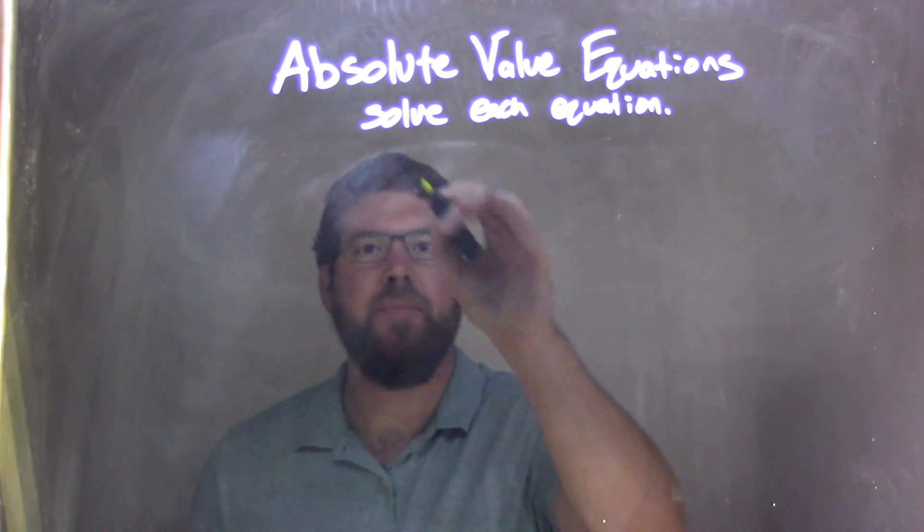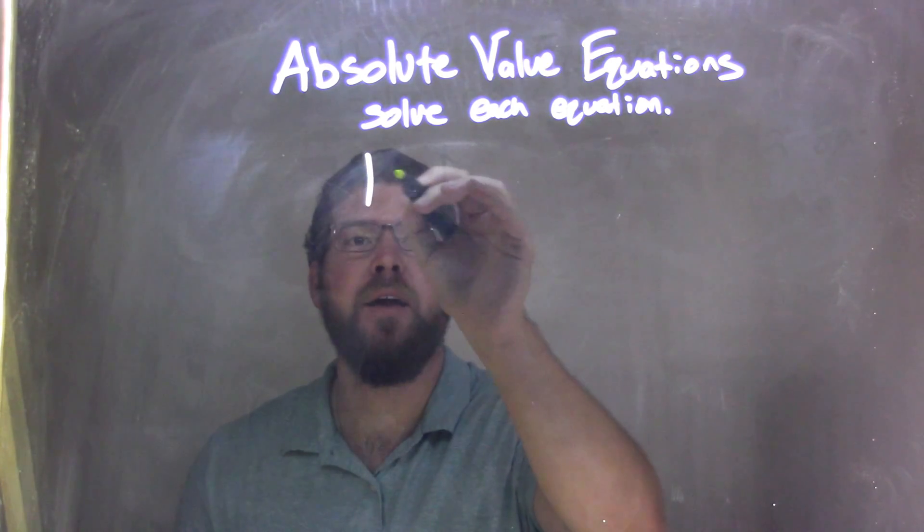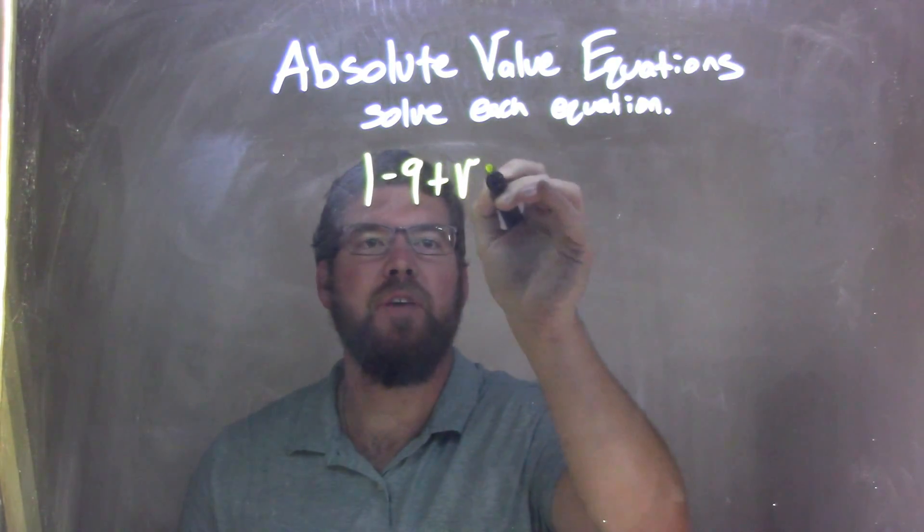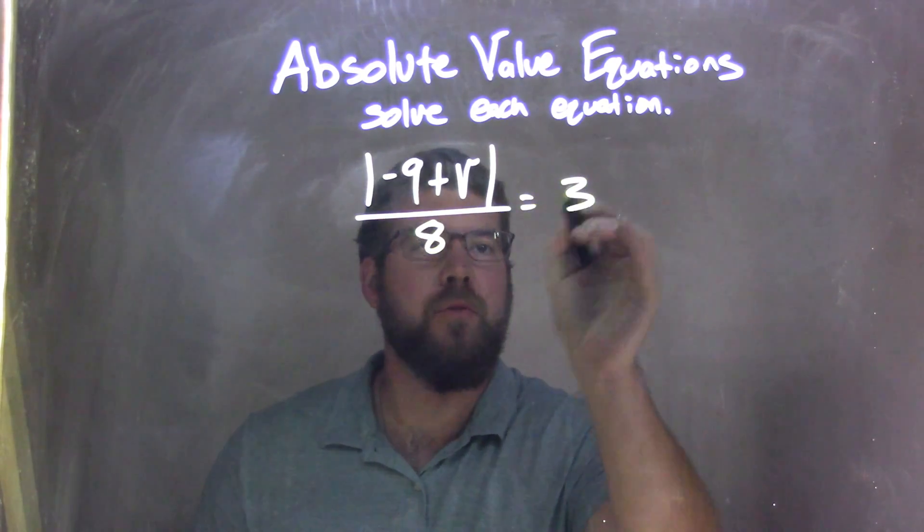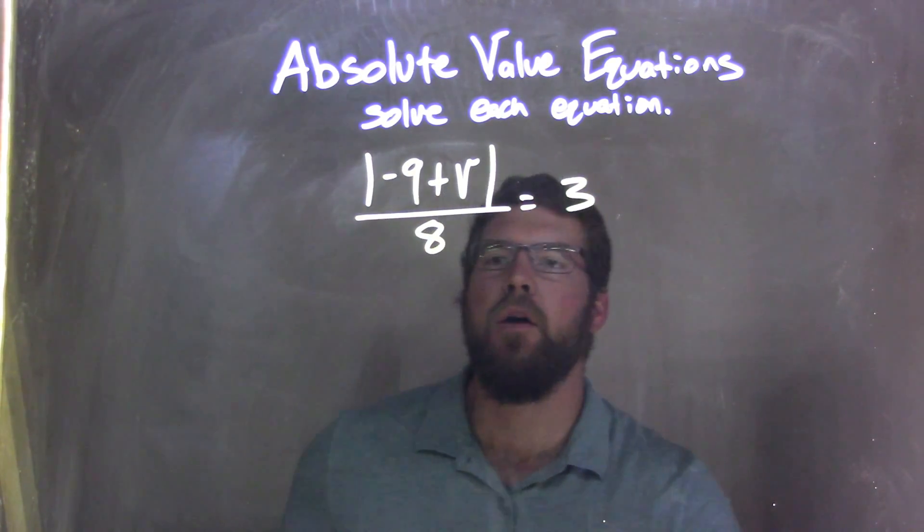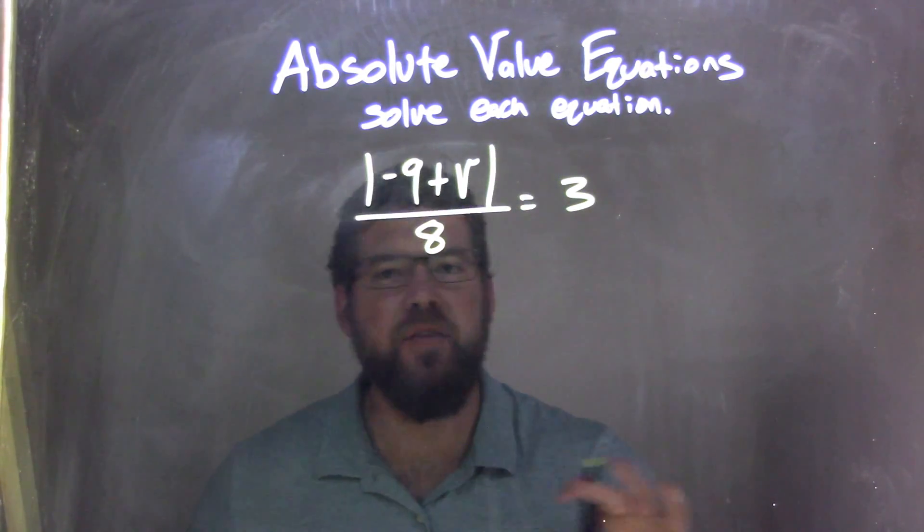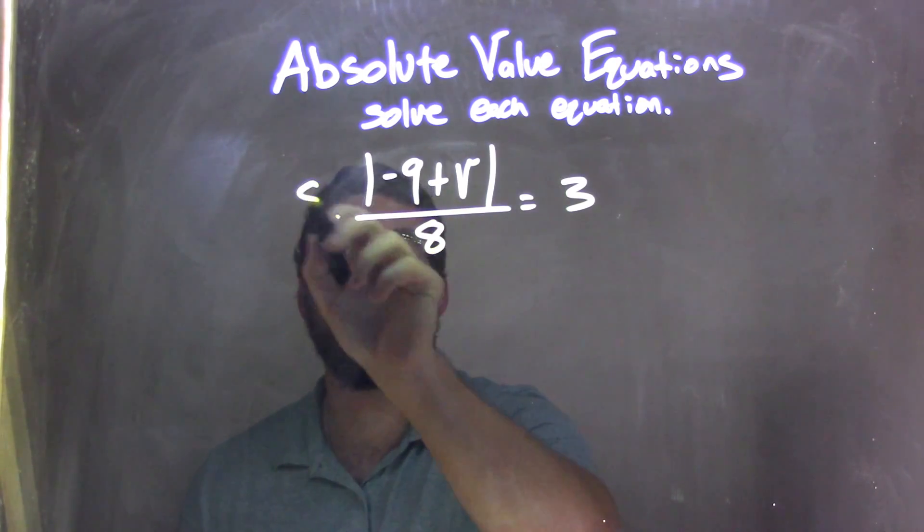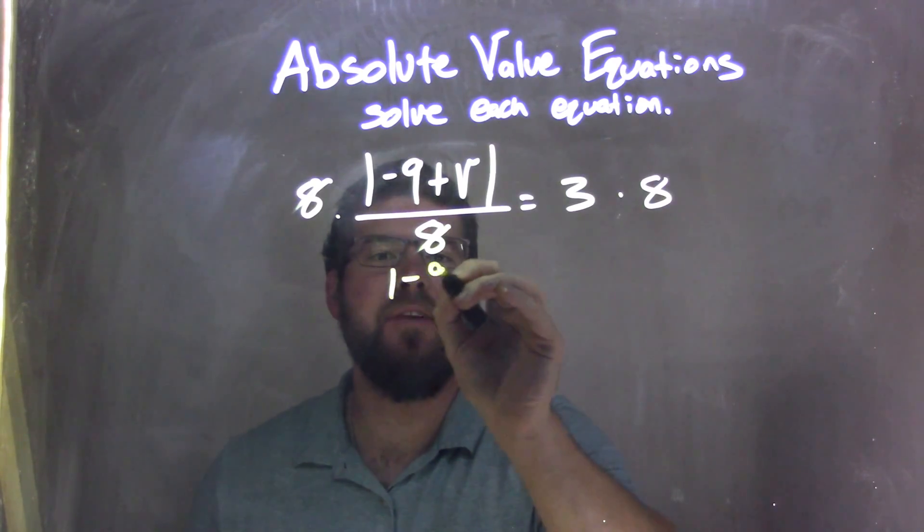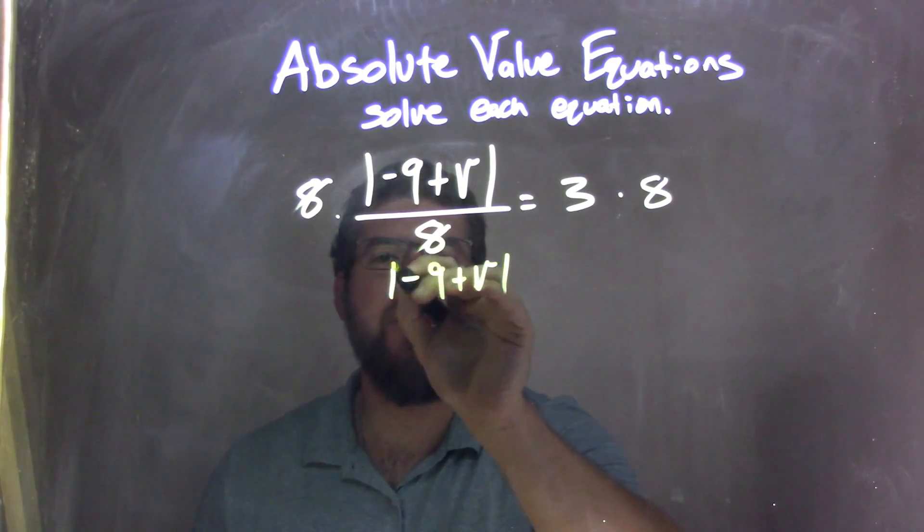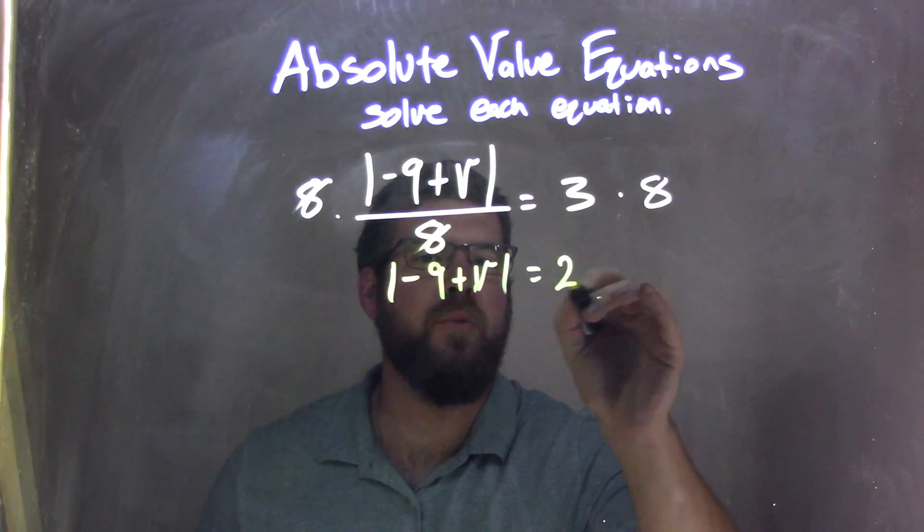If I was given this equation, the absolute value of negative 9 plus V all over 8 equals 3. My first step to isolate the absolute value is to multiply both sides by 8. That eliminates the 8s here, leaving me with negative 9 plus V in the absolute value equals 3 times 8, which is 24.